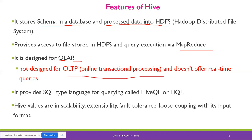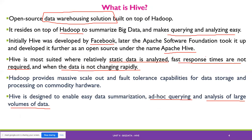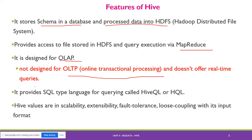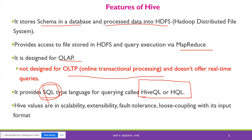OLTP means online transactional processing, which involves real-time response. Hive is not designed for that. It provides an SQL-type language for querying called HiveQL or HQL. Hive values scalability, extensibility, fault tolerance, and loose coupling with its input formats.